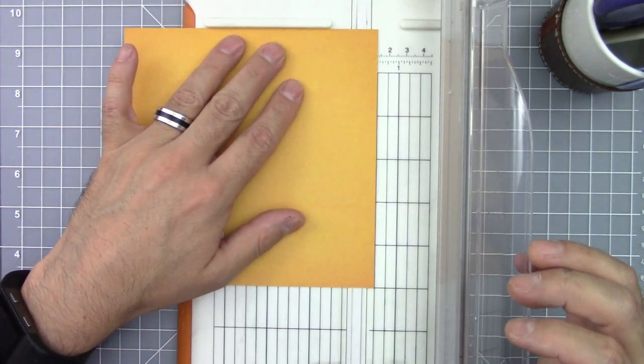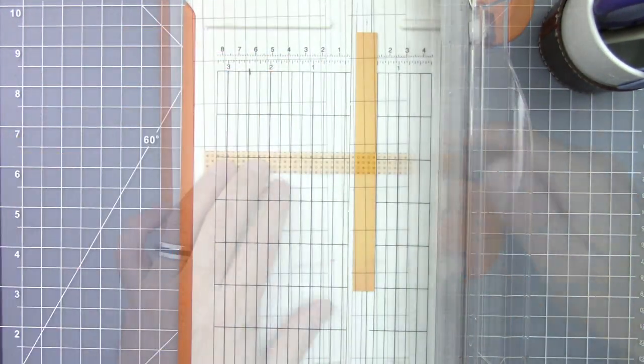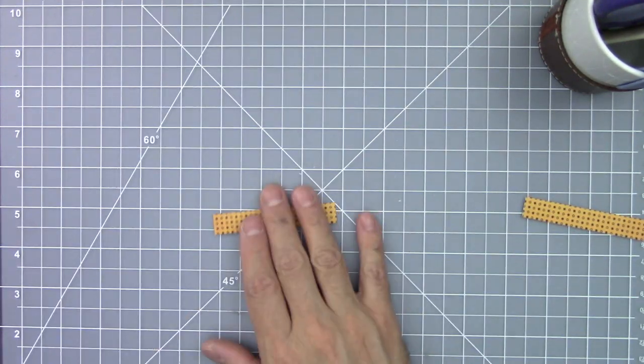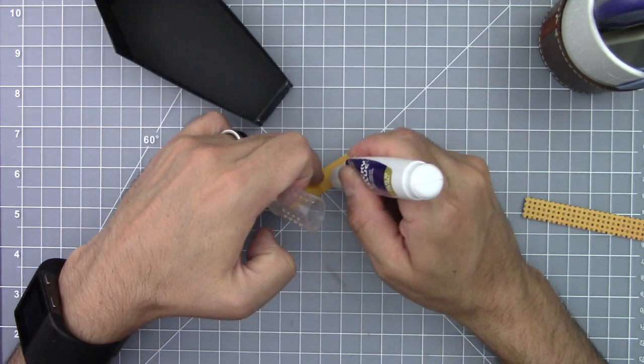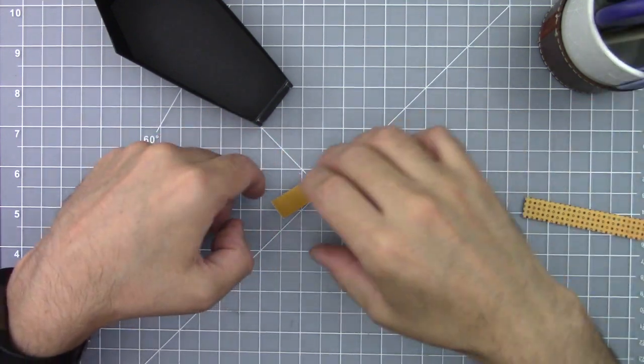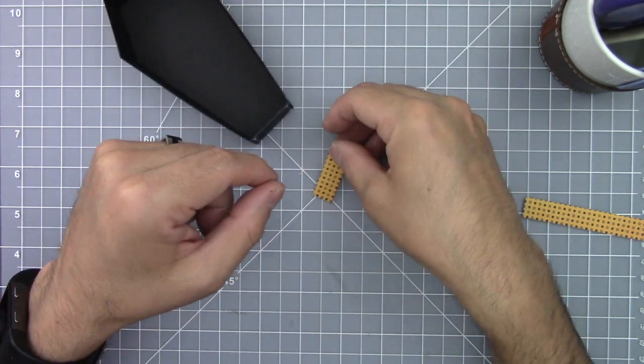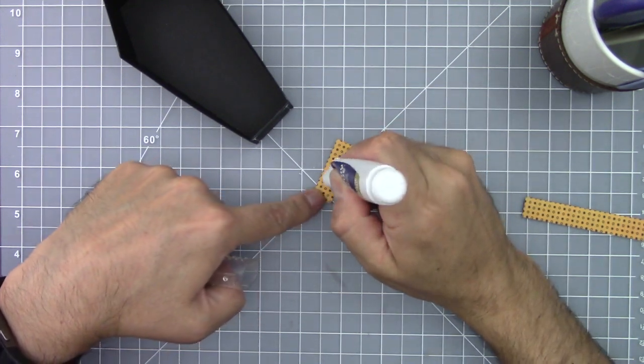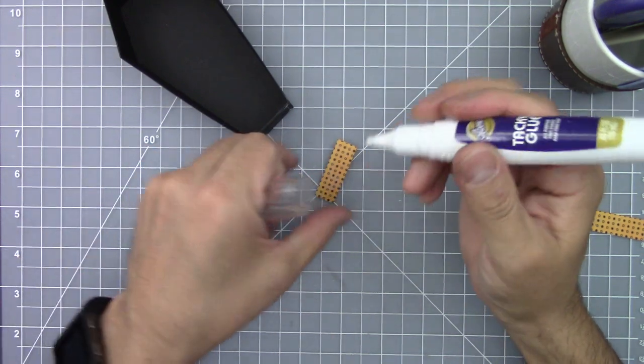To make the base of the coffin easy to separate from the lid, I created some pulling tabs. This is a three inches by a half inch strip of pattern paper that I folded in half and glued using liquid adhesive in the center. And then I also added glue to one of the sides to glue it to the coffin base.